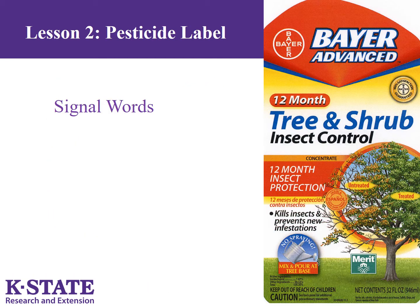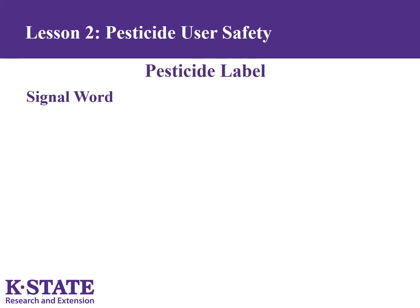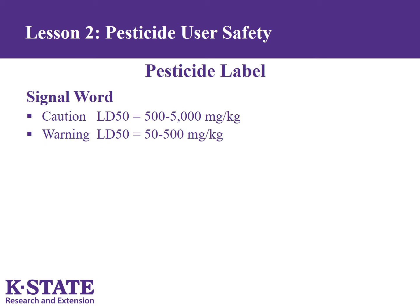Signal words are found on the front of pesticide product labels. These words help alert users to specific hazards associated with the product. They are printed in capital letters to make it easier for the user to find. Signal words indicate the relative toxicity of a product. Caution, warning, and danger are the signal words which can be found on a label.